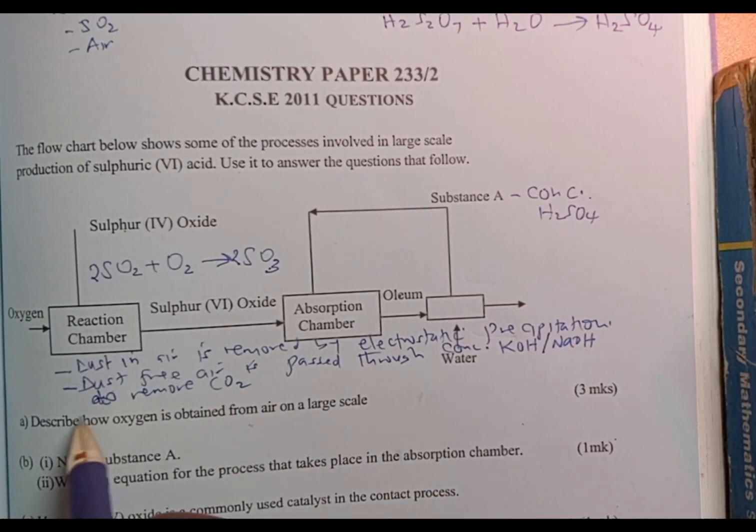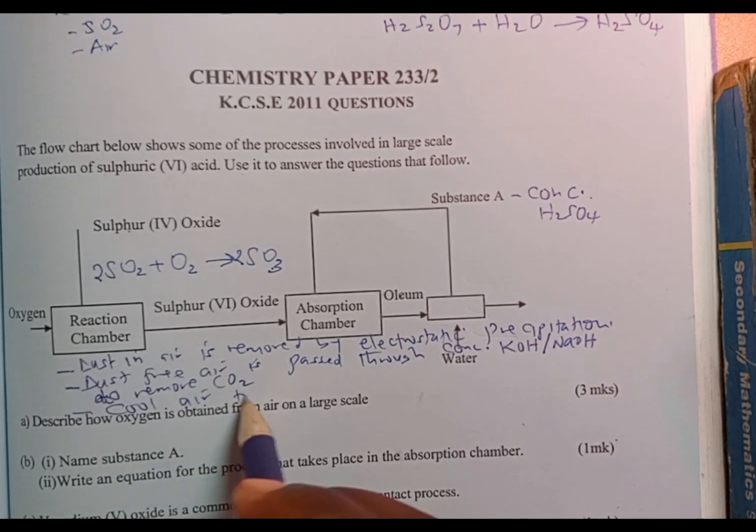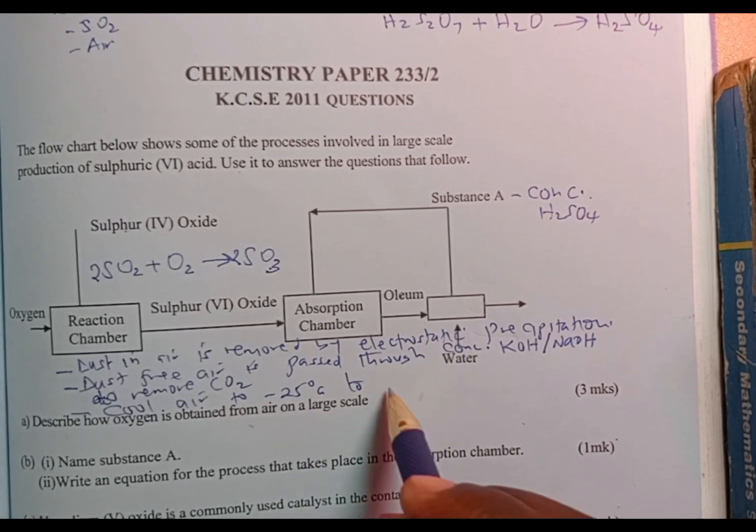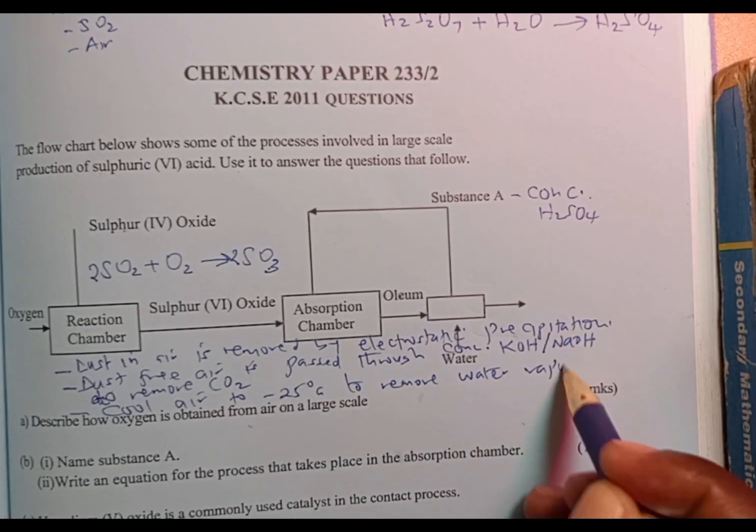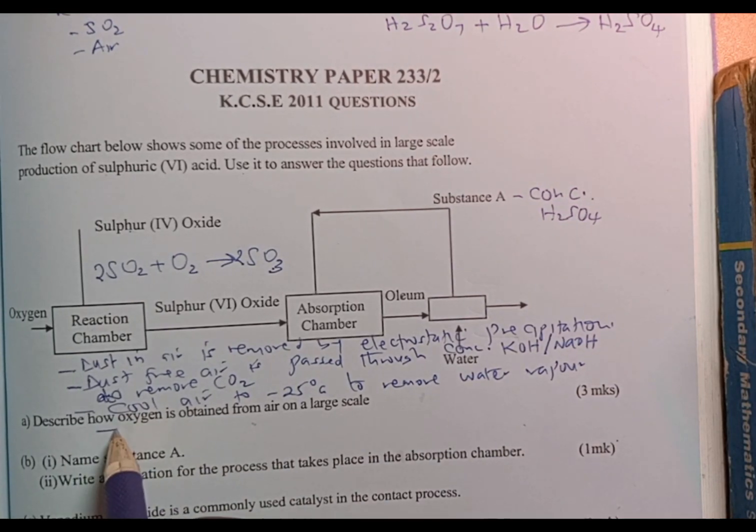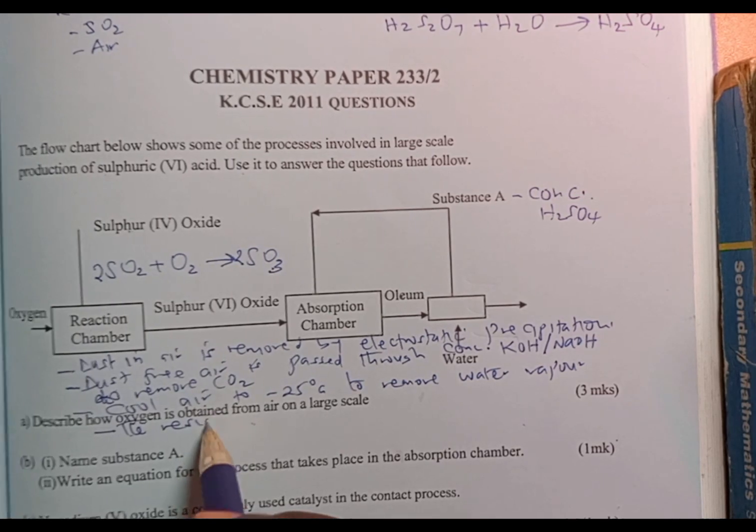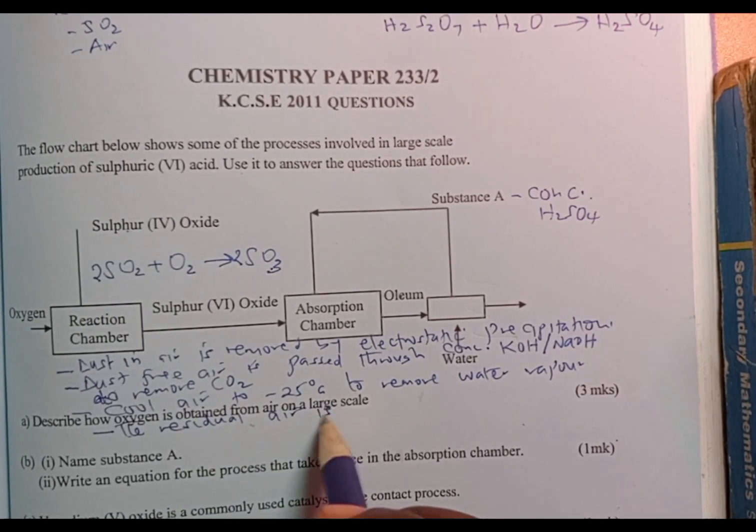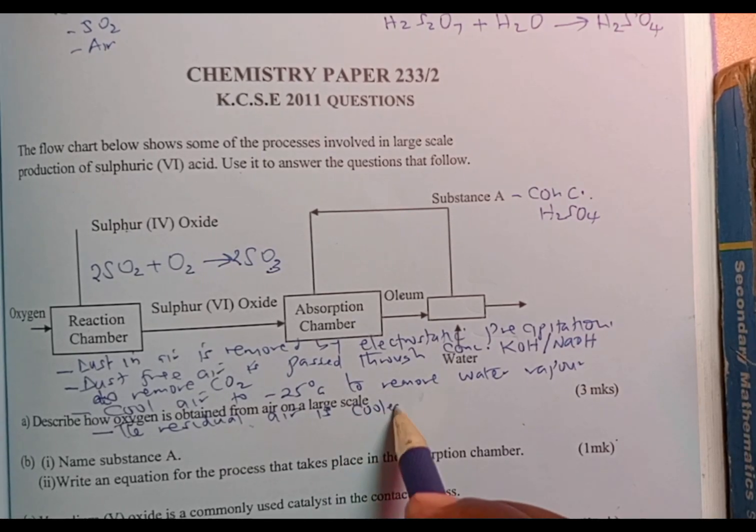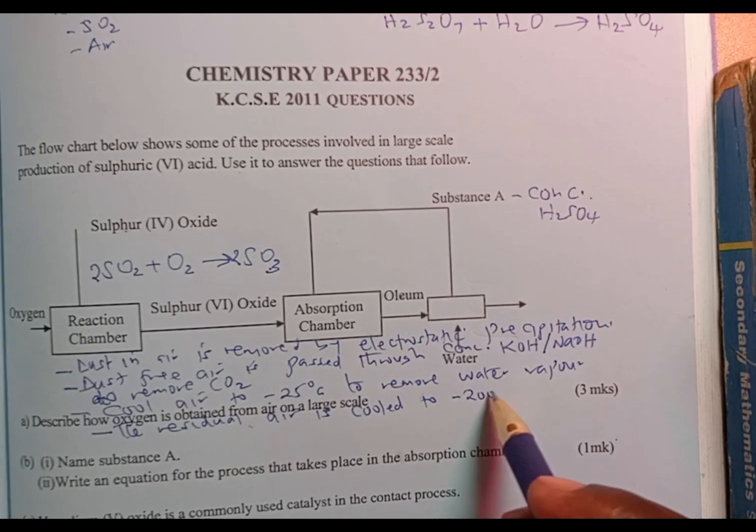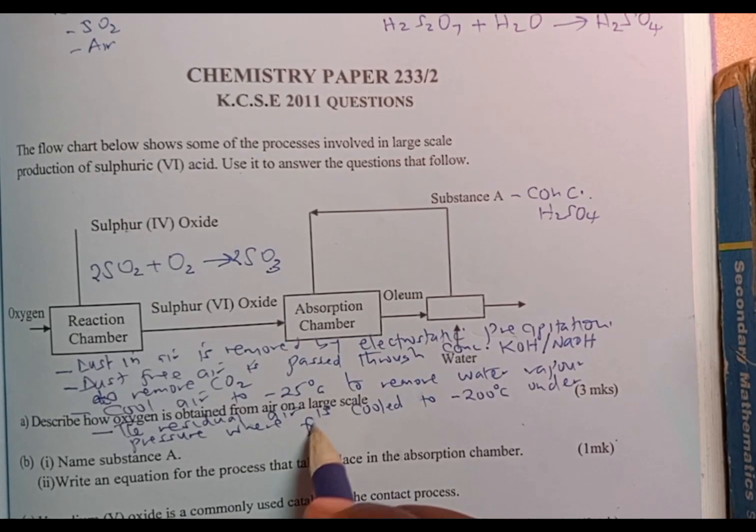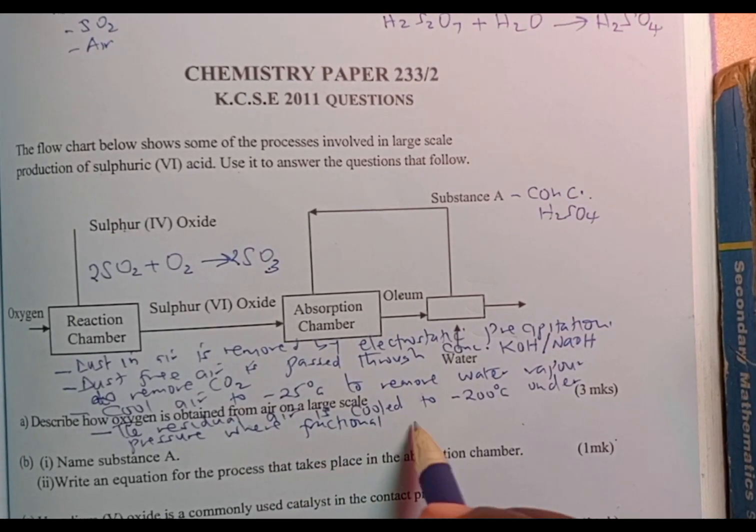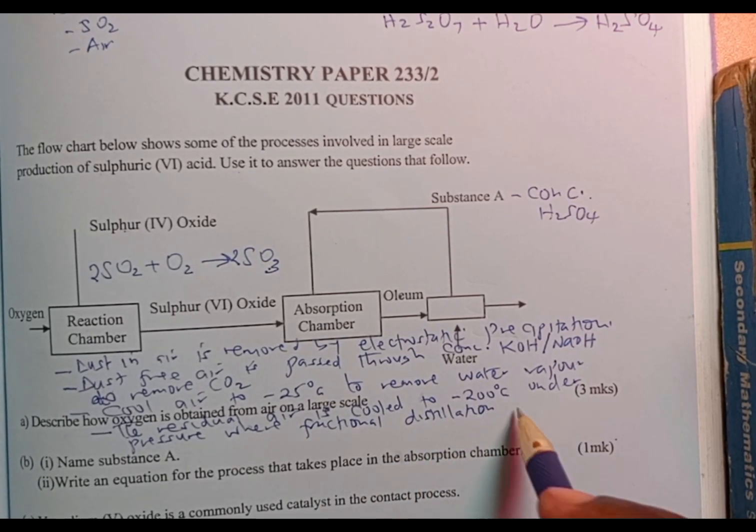From there, we cool air to negative 25 degrees Celsius to remove water vapor. And now the remaining part of the air, which we call the residual air, is cooled to negative 200 degrees Celsius under pressure, where fractional distillation is carried out.